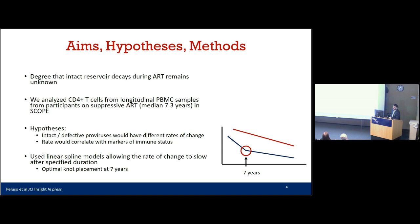The degree to which the intact reservoir decays during ART remains unknown. In this project, we analyzed CD4 T cells from longitudinal PBMC samples from participants on suppressive ART in the SCOPE cohort. These individuals have been on ART for a median of 7.3 years. We hypothesized that intact and defective proviruses would demonstrate different rates of change, and that the rate of change would correlate with markers of immune status like CD4 nadir. We used linear spline models with a cut point — optimally placed at 7 years — where the slope can change.